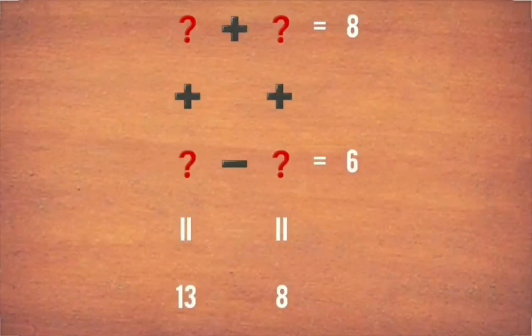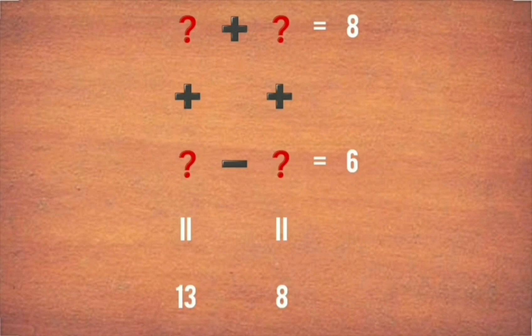Let's go into question number 1. Firstly, if you see horizontally, adding a number with some other number gives 8. Likewise, subtracting a number with some other number gives 6.